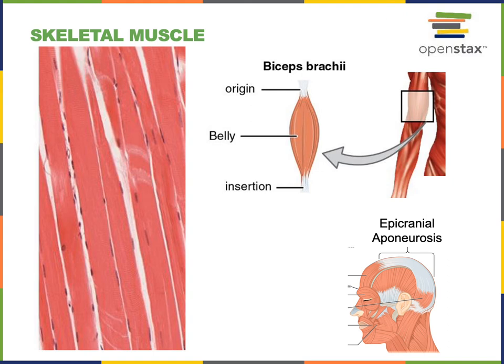The ends of the skeletal muscle organ are tendons that connect the skeletal muscle to bones at the origin and insertion. The origin is the bony attachment where the skeletal muscle remains stationary during the action of that muscle. The insertion is the location where the muscle's tendon attaches to a bone that will move during the action performed by that muscle.